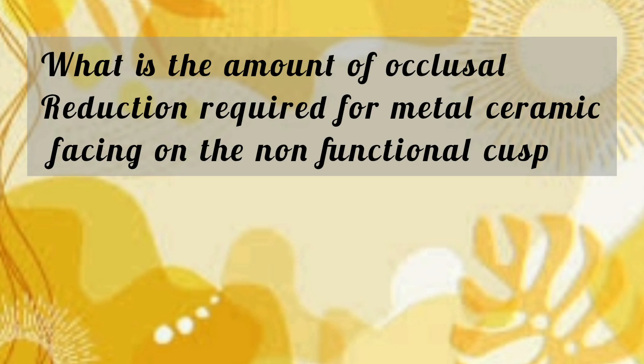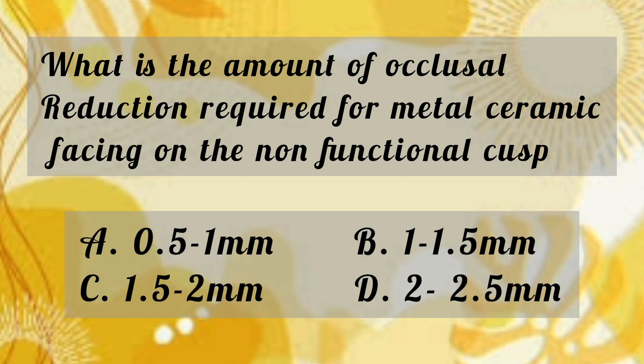Hi, hello! Welcome back to our channel. In this video we are going to discuss yesterday's MCQ. But first, today's MCQ: What is the amount of occlusal reduction required for metal-ceramic facing on the non-functional cusp? Option A: 0.5 to 1 mm. Option B: 1 to 1.5 mm. Option C: 1.5 to 2 mm. Option D: 2 to 2.5 mm.